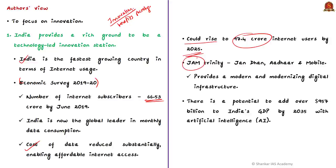This augments the JAM Trinity. JAM stands for Jan Dhan Yojana, Aadhaar, and Mobile. By integrating these three technologies, a modern digital infrastructure of financial inclusion, unique identification, and well-developed mobile infrastructure can be established. Along with this, artificial intelligence is the recent buzzword, and according to recent reports, there is potential to add over 957 billion dollars to India's GDP by 2035 — close to 1 trillion dollars.